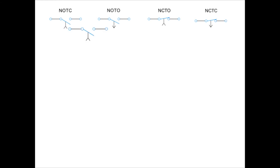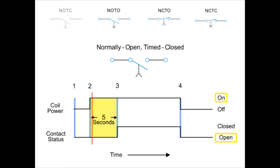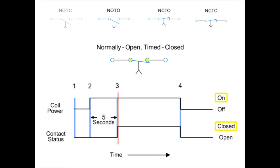First, we have the normally open, timed closed — NOTC — contact. This type of contact is normally open when the coil is unpowered or de-energized. After the coil has been continuously powered for a specified amount of time — in this example, five seconds — the contact is closed. The contacts will immediately open when the coil is de-energized.